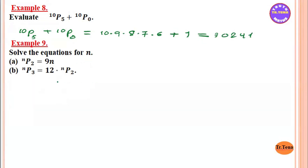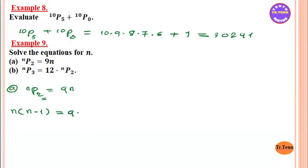Solve the equation for n: NP2 equals 9n. So NP2 means n times n-1 equals 9n.